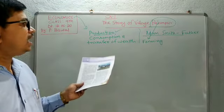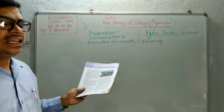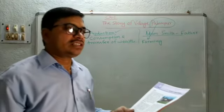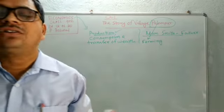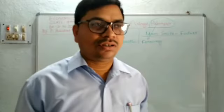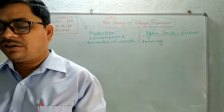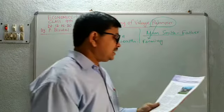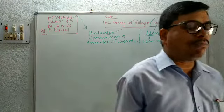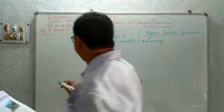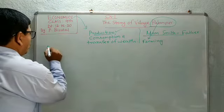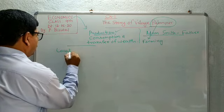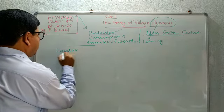After reading this chapter clearly, we will come to know about the different processes of production and what factors are required for production. This is the overview. Now, in the very beginning, we will come to know about the location of village Palampur.